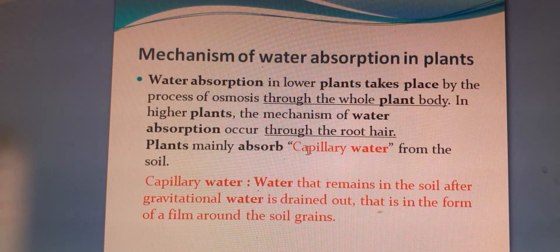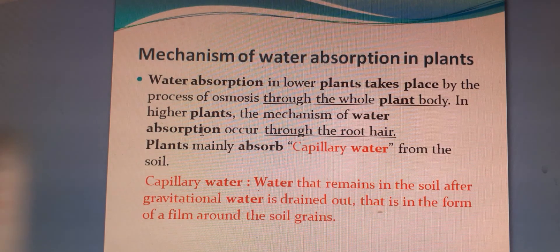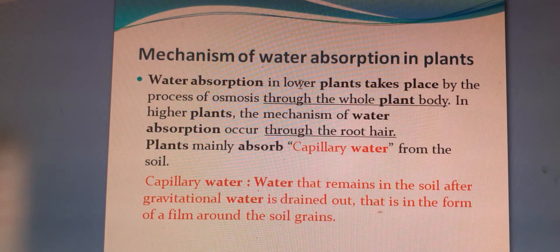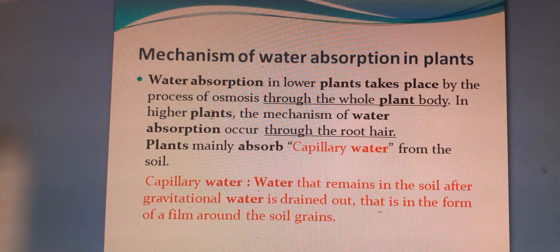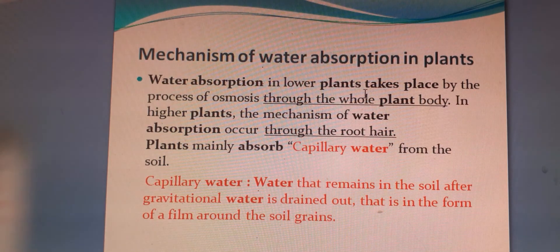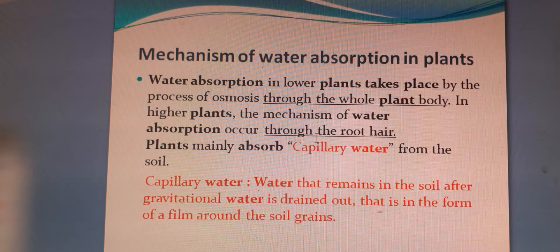Now, the mechanism of water absorption in plants. There are some differences between lower plants and higher plants in terms of water intake. In lower plants, water absorption takes place by the process of osmosis through the whole body. In higher plants, the mechanism of water absorption occurs through the root hair.